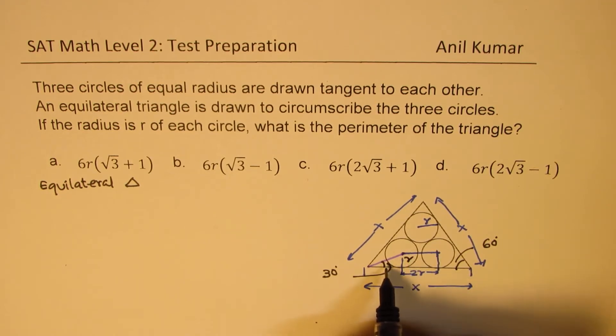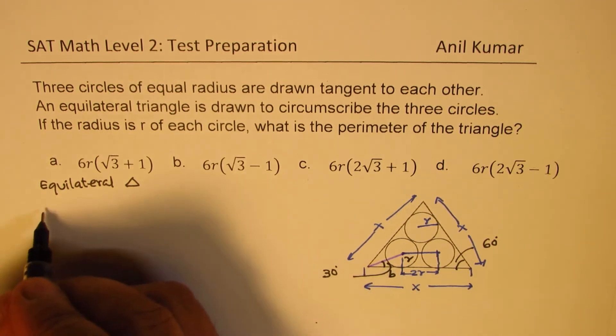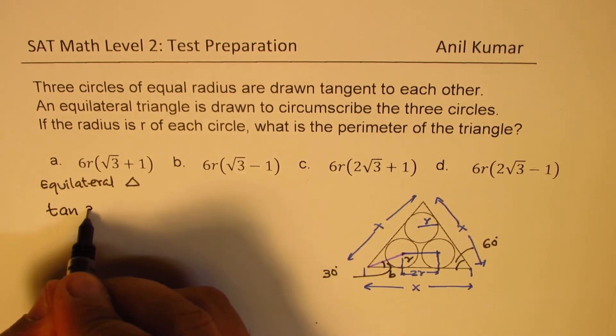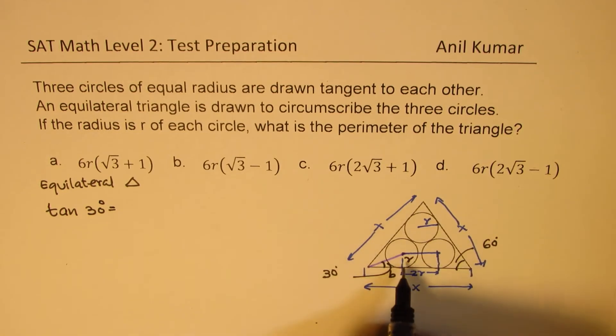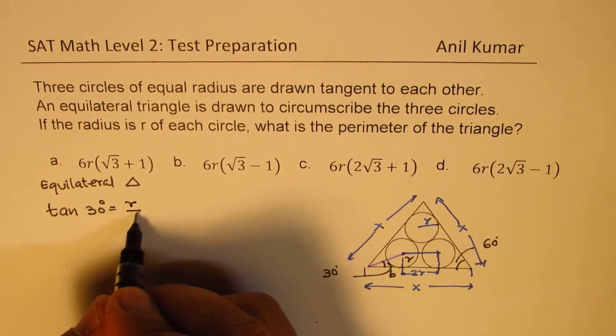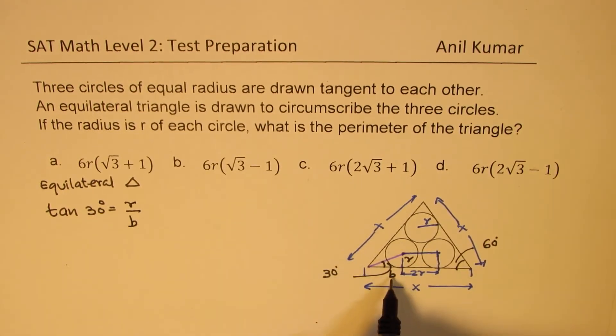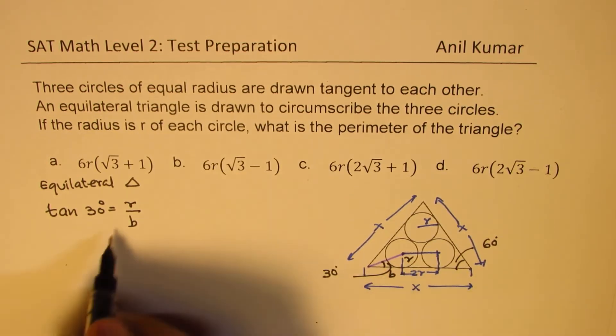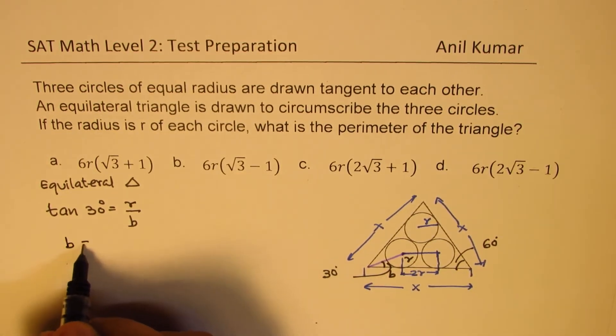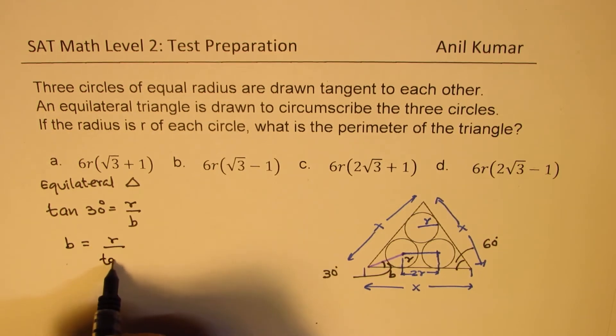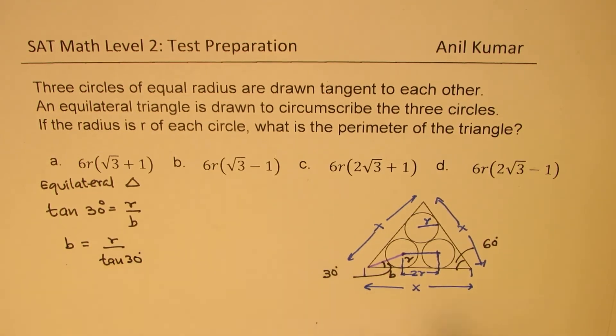And the side opposite to the angle is R. And we need to find what is the base of this. So we can use tan. So we know that tan of 30 degrees is equal to R over B. So from here, we can get what this base is up to the first circle center. So base equals R over tan of 30 degrees.